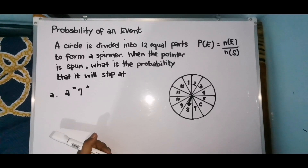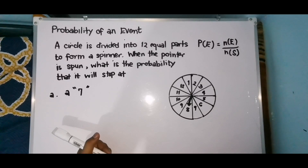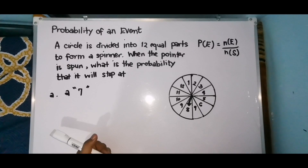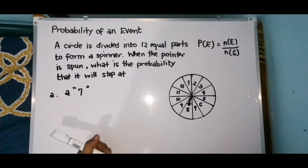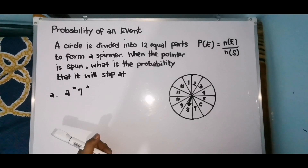So there are different experiments in finding the probability of an event. Meron tayo yung tossing a coin — ang ating sample space ay dalawa: head and tail. Pwede rin namang drawing a card from a standard deck of cards — meron tayong 52 cards. But today, ang focus na ating experiment ay spinning a spinner. Eto yung ating problem.